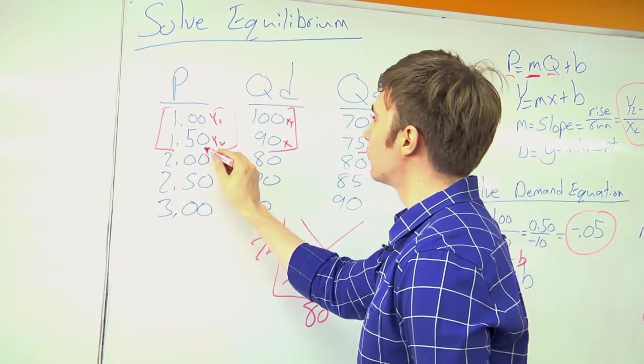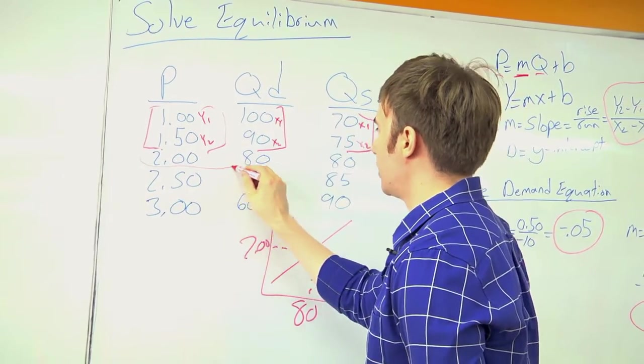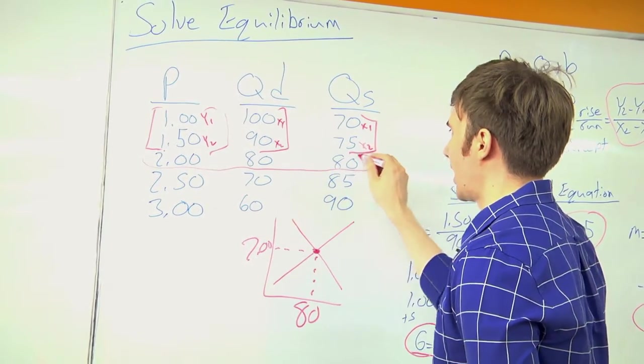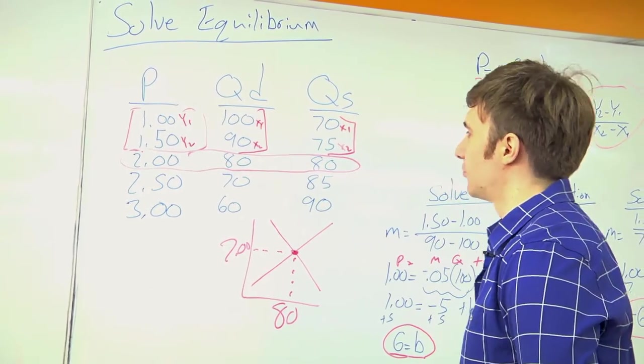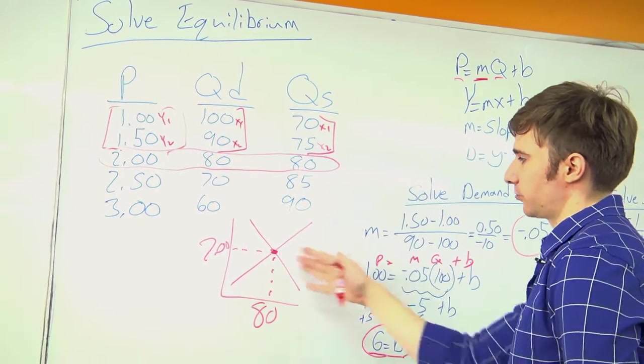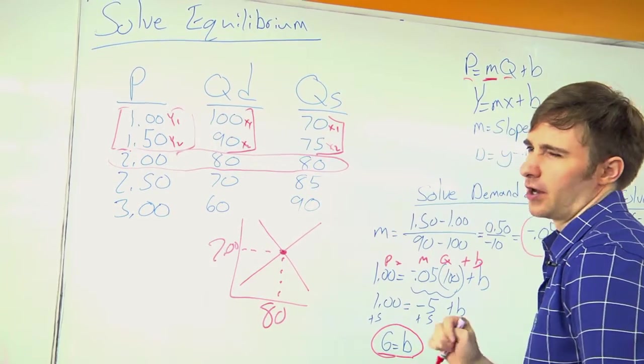If I look at this chart, I can see that at $2, the demand is $80 and the supply was $80. So we can see in the chart that our math was correct. We correctly found equilibrium.